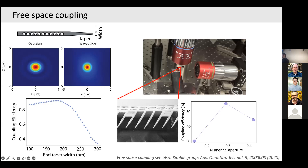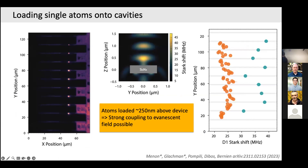Follow-up on coupling efficiency optimization: right now we're doing more optimization. We want to optimize the coupling efficiency and push it higher. We're relatively convinced we're loading on top of the device in many cases based on the Stark shift distributions. But maybe only 30% of the time are we really at the right antinode position — 70% of the time we can't couple into the device because we're too far away. Optimizing this has a lot to do with the device thickness.